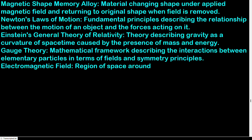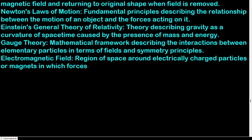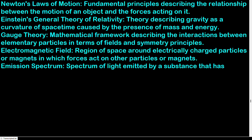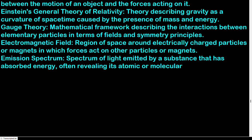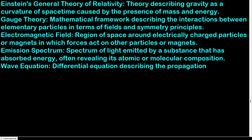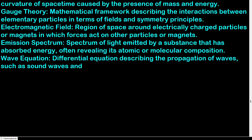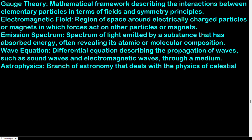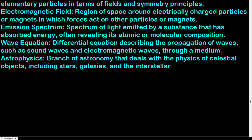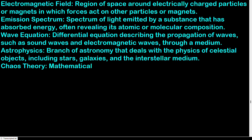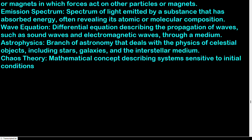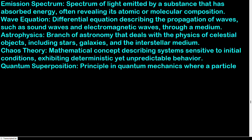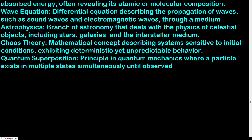Electromagnetic field: region of space around electrically charged particles or magnets in which forces act on other particles or magnets. Emission spectrum: spectrum of light emitted by a substance that has absorbed energy, often revealing its atomic or molecular composition. Wave equation: differential equation describing the propagation of waves such as sound waves and electromagnetic waves through a medium. Astrophysics: branch of astronomy that deals with the physics of celestial objects, including stars, galaxies, and the interstellar medium. Chaos theory: mathematical concept describing systems sensitive to initial conditions, exhibiting deterministic yet unpredictable behavior. Quantum superposition: principle in quantum mechanics where a particle exists in multiple states simultaneously until observed or measured.